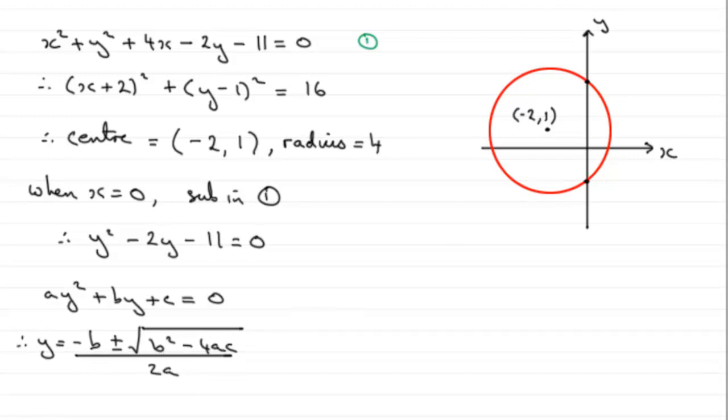So if we use this formula here where a is clearly 1, b is minus 2, c is minus 11, then we're going to get y and the reason I know about the formula is because this square root bit will suggest using surds.